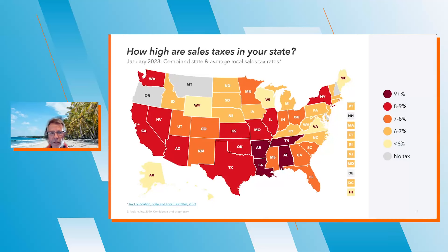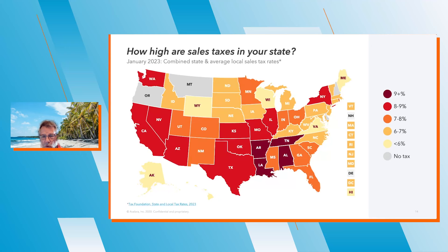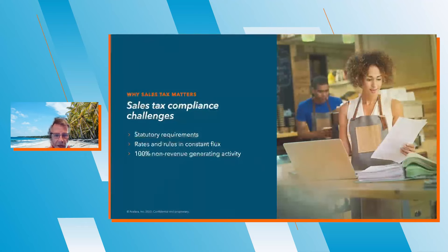The tax load in your state varies as well. Most states are in that range of 6% to 9%. You can see 8% to 9% in bright red, 7% to 8% in orange, and 6% to 7% in lighter orange. There are NOMAD states that have no sales tax whatsoever, and a few states are over 9% — inclusive of any local sales tax applicable in those jurisdictions. It's important to get it right because it makes a difference on your clients' invoices.